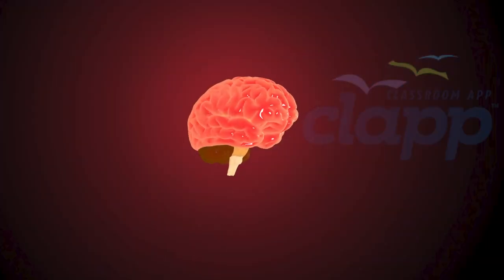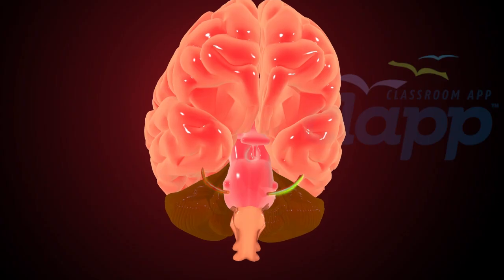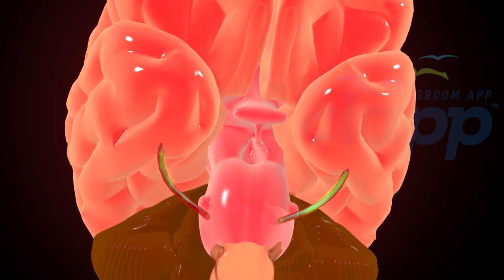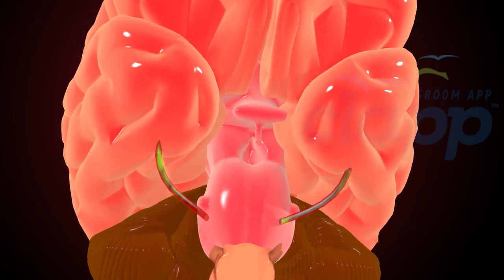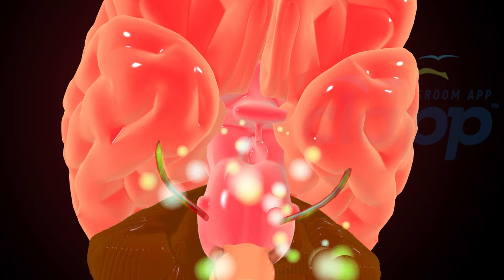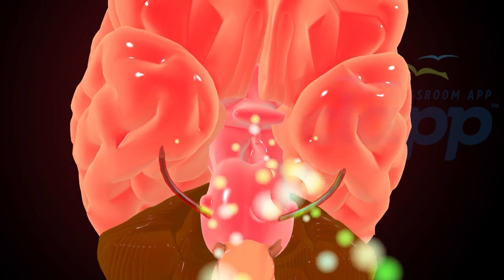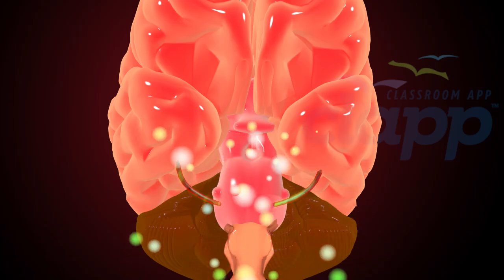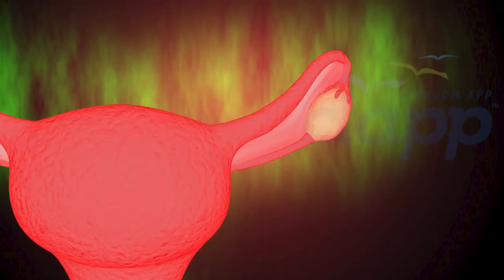In a normal menstrual cycle, the brain makes the hormone GnRH, which travels into the pituitary gland. The pituitary gland then releases two hormones, FSH (follicle-stimulating hormone) and LH (luteinizing hormone), which travel in the bloodstream to the ovary.